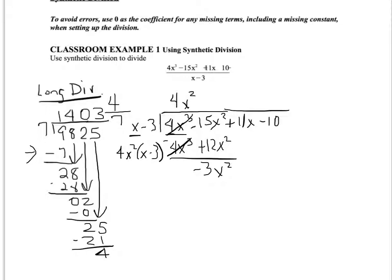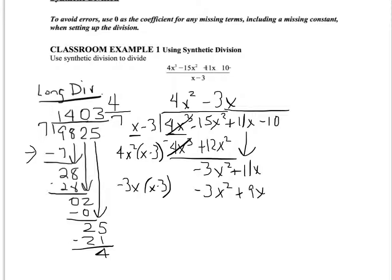We're almost ready to repeat the process — bring down the next term, just like we did with numbers. We ask: x times what gives negative 3x²? That's negative 3x. Multiply negative 3x times x minus 3 and distribute: that's negative 3x² plus 9x. Now add the opposite — change all signs — so negative 3x² becomes positive and 9x becomes negative 9x. The first terms cancel and 11x minus 9x gives 2x.